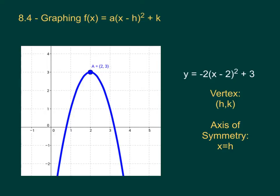Section 8.4, graphing f(x) equals a times (x minus h) squared plus k. We are looking at a very different type of equation for our parabola here. We are used to the standard form of y equals ax squared plus bx plus c, but this is what we call vertex form.